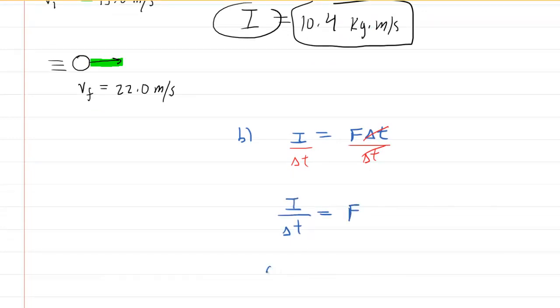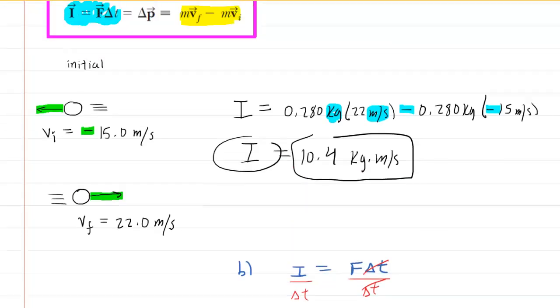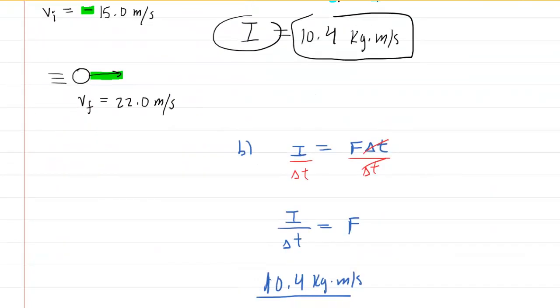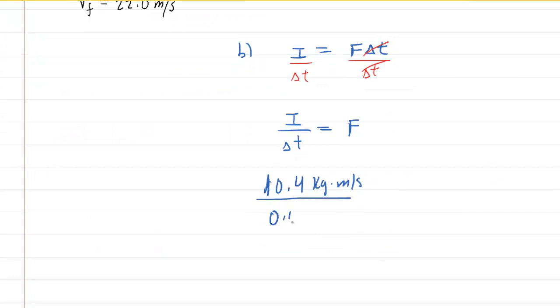We'll take the impulse we determined in part A, the 10.4 kilograms times meters per second, and divide that by the given time interval of 0.06 seconds. We'll put that in for the time interval and calculate this. When we punch this in, we get about 173.